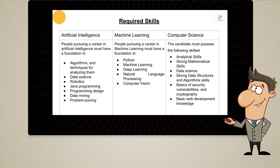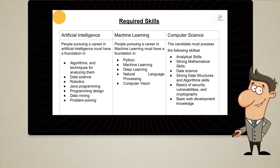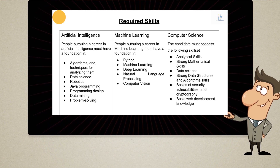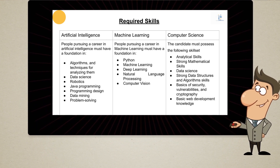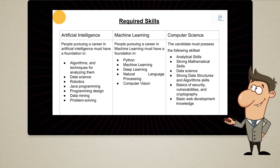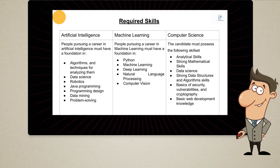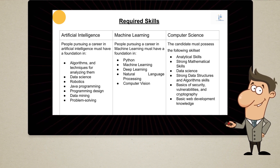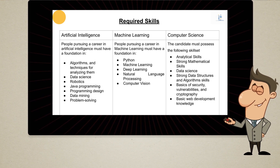For computer science, you need analytical skills, strong mathematical skills, data science, strong data structures, algorithm skills, basic security and vulnerabilities, cryptography, and web development knowledge.